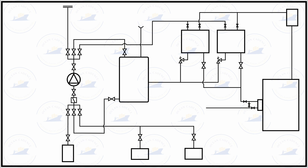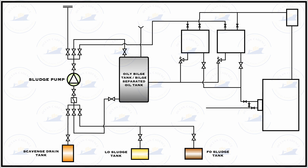In addition to understanding the sludge system, we will also understand how this is handled. As we can see on the line diagram, the sludge pump would predominantly take suction from a number of tanks. The tanks that exist in this system include the fuel oil sludge tank, the lube oil sludge tank, the scavenge drain tank, and the oily bilge tank — also regarded as the bilge separated oil tank, commonly known as the BSOT. The fuel oil sludge tank and lube oil sludge tank are dedicated for sludge generated from the purifiers — the fuel separator and lube oil separator — and usually contain a mixture high in water content due to intermittent discharge and water being separated from the fuel.